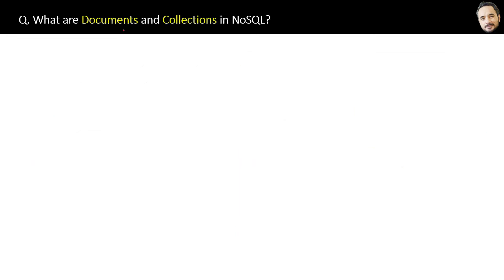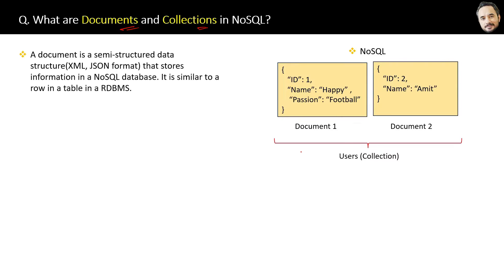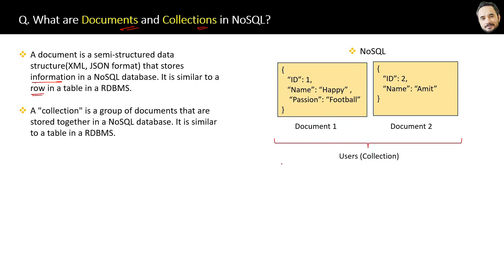What are documents and collections in NoSQL? Here is the simplest and easy-to-remember definition. A document is a semi-structured data structure, which can be in XML or JSON format, that stores information in a NoSQL database. It is very similar to a row in a table in an RDBMS. And a collection is a group of documents that are stored together in a NoSQL database, similar to a table in RDBMS.